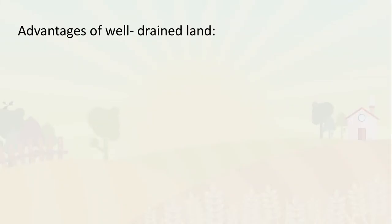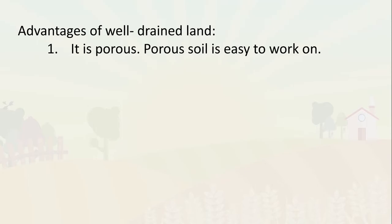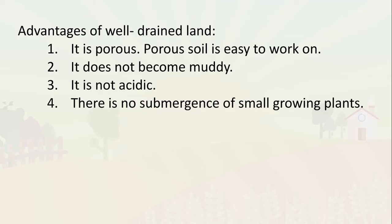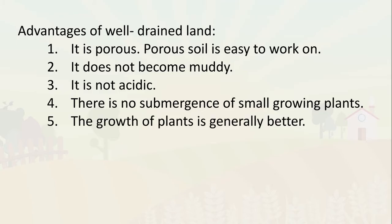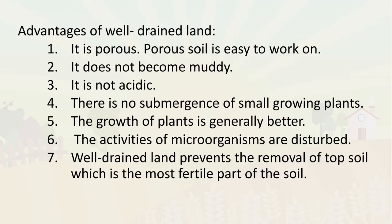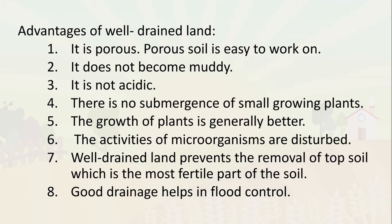Advantages of well-drained land include: the soil is porous and easy to work on, it does not become muddy, it is not acidic, there is no submergence of small growing plants, the growth of plants is generally better, the activities of microorganisms are not disturbed. Well-drained land also prevents the removal of topsoil, which is the most fertile part, and good drainage helps in flood control.